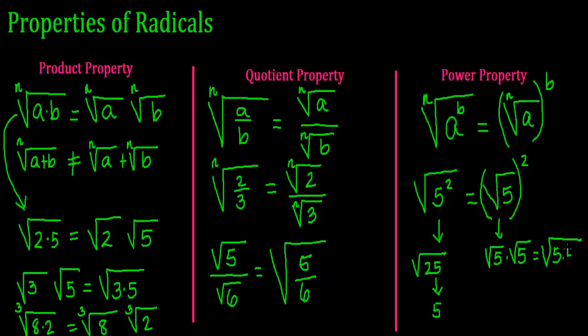5 times 5, which becomes the square root of 25, which is 5. So that's why they're equivalent.